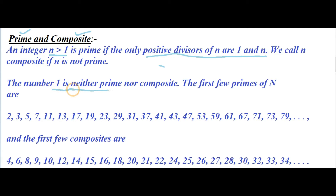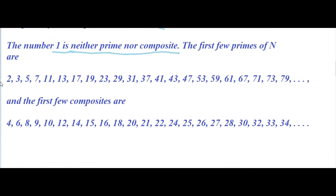The number 1 is neither a prime number nor a composite number. We are talking about positive numbers here. The first few prime numbers include 2 — which is the only even prime number — because any other even number after that is divisible by 2. That is the important thing to know about prime numbers, and it is quite fascinating.